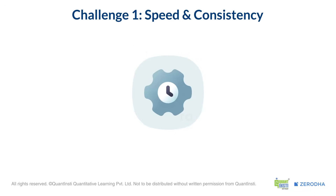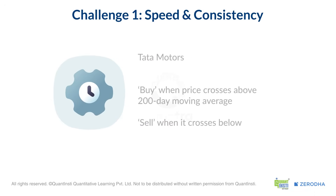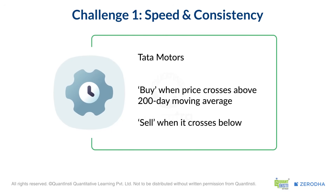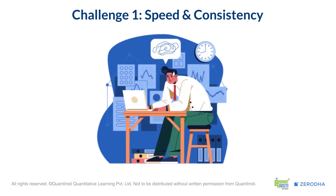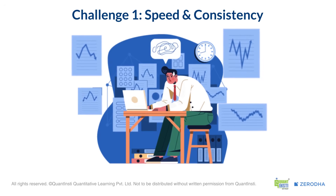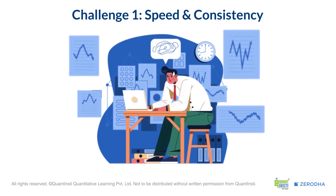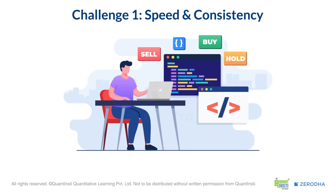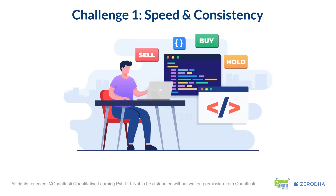Think about this. You've developed a strategy that says buy Tata Motors when its price crosses above the 200-day moving average and sell when it crosses below. It has clear rules for entry and exit. But imagine trying to catch that signal across dozens of stocks all at once, especially during volatile market hours. Algo trading lets you transform those rules into code — trading signals that can be applied across many instruments at once.